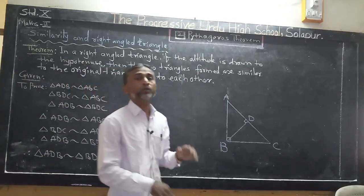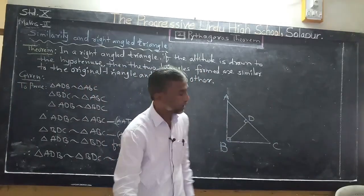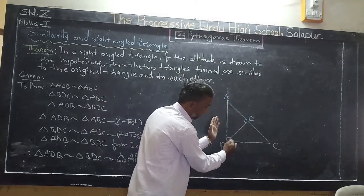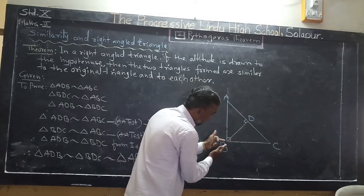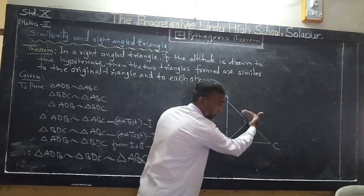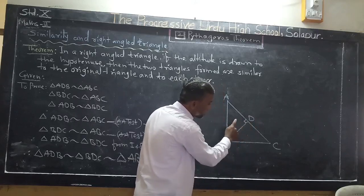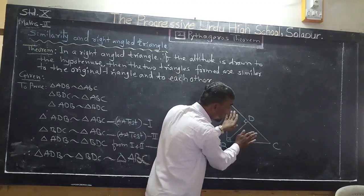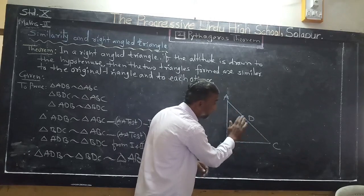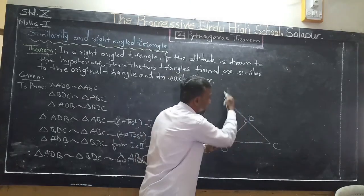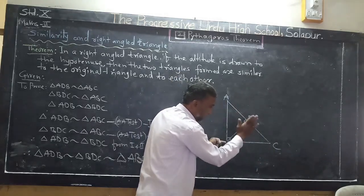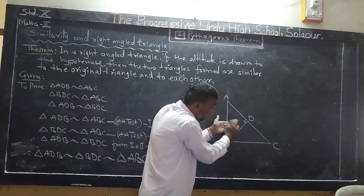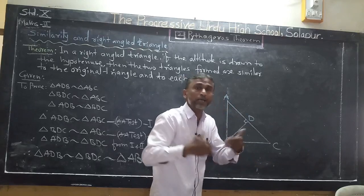First we should know the meaning of this theorem, then we will prove it. If triangle ABC is a right-angled triangle in which angle B is 90 degrees, and the altitude is drawn to the hypotenuse, then the two triangles formed — triangle ADB and triangle BDC — are both similar to the original triangle ABC, and also similar to each other.